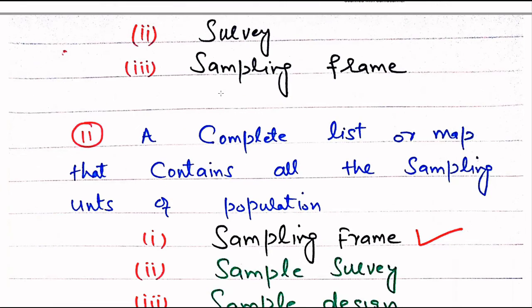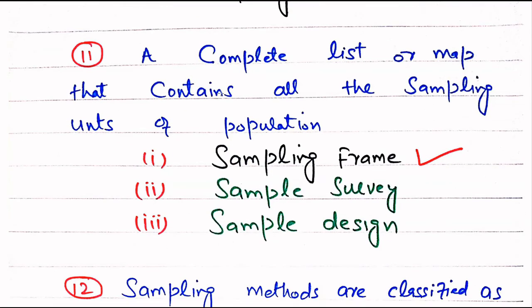Question number 11. A complete list or map that contains all the sampling units of a population is called — Sampling frame, Sample survey, or Sample design. The right choice is Sampling frame. Sampling frame is a complete list or map that contains all sampling units.